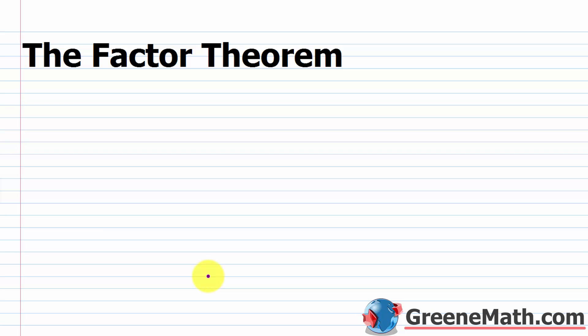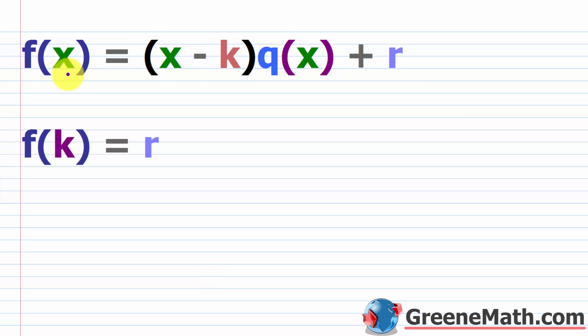In this lesson, we want to talk about the factor theorem. Before we get into that, I want to make sure you understand the remainder theorem, which was what we talked about in the last lesson. So if we have some polynomial function f of x, and it's divided by some linear factor — the coefficient on x is 1, the exponent on x is 1 — we call it x minus k when we think about this generically.